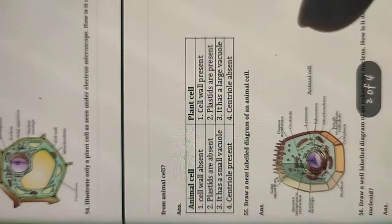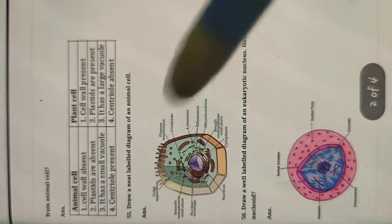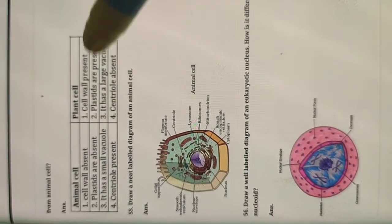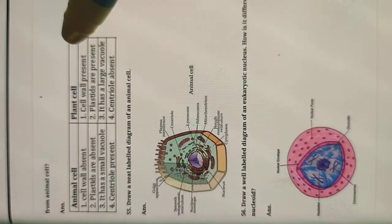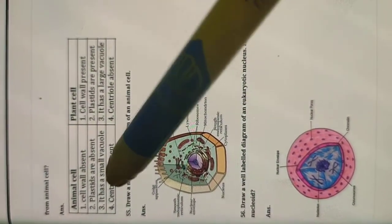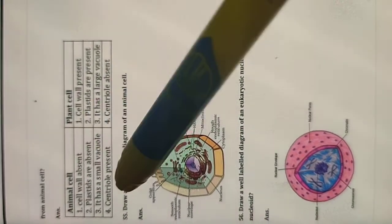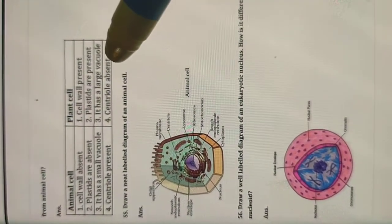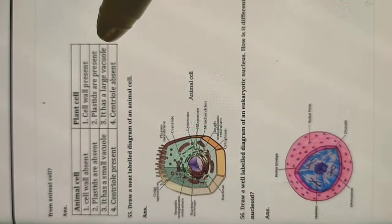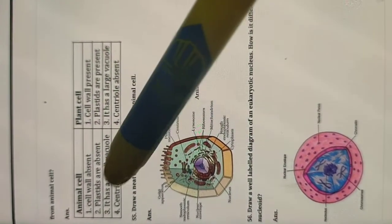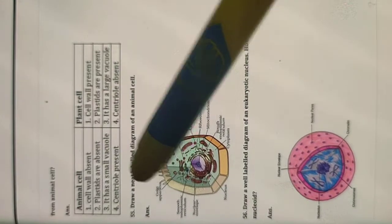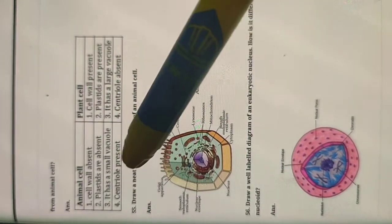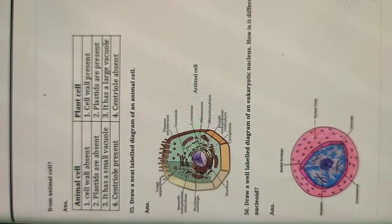For that question, draw columns and write the differences. Cell wall is absent in animal cells but present in plant cells. Plastids are present in plant cells but absent in animal cells. Vacuoles are very large in plant cells but smaller and more numerous in animal cells. Centrioles are absent in plant cells but present in animal cells.